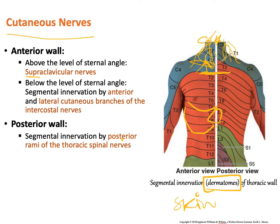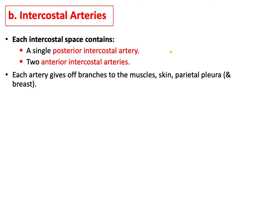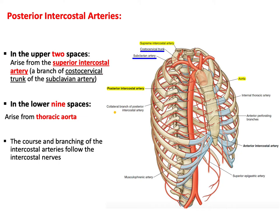Moving on to intercostal arteries: each intercostal space has one posterior intercostal artery and anteriorly two anterior intercostal arteries. Each artery gives branches to the muscle, skin, parietal pleura, and the breast — supplying the skin and muscles externally and the parietal pleura inside the thoracic cavity.